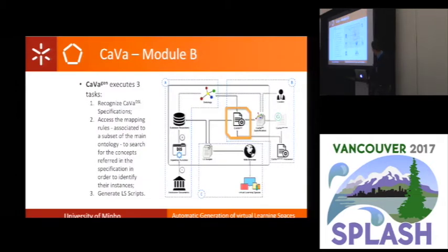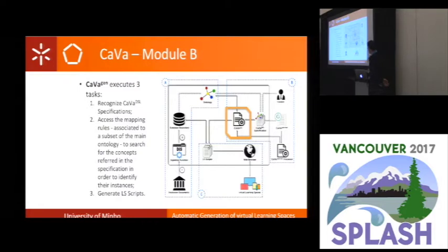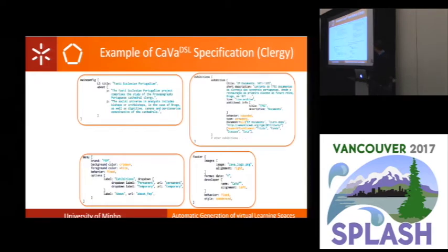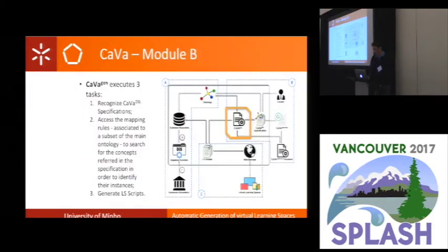After the curator specification is done, CAVA Gen — the main component of this architecture — executes three tasks: it recognizes the CAVA DSL specification as input; it accesses the mapping rules associated to a subset of the main ontology to search for the concepts referred to in the specification in order to identify their instances; and finally, it generates the learning space scripts.